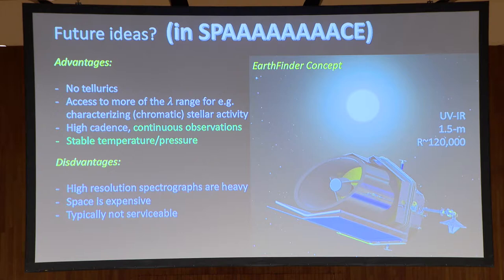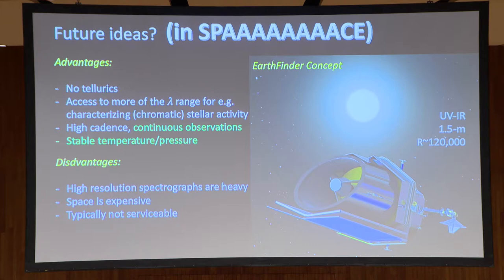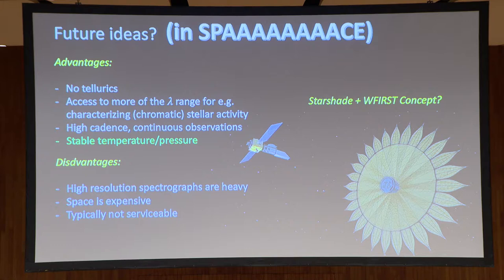There are some ideas for how we can do this. The EarthFinder concept — a UV to infrared telescope, 1.5 meters with a resolution of 120,000 — is a fairly well-rounded concept at this point. The starshade and WFIRST combination is another way we might be able to do this, though I wasn't actually able to find information about the resolution you might get with it — if anybody knows, tell me in the Q&A.